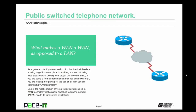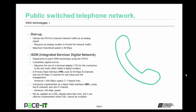One of the most common physical infrastructures used in WAN technology is the public switched telephone network, the PSTN, due to its widespread availability — just about everybody has a telephone line run to their house or building. An older technology, but still somewhat valid today, is dial-up. Dial-up utilizes the PSTN to transmit network traffic as an analog signal and does require an analog modem to format the network traffic correctly. Your maximum theoretical speed on dial-up is 56 kilobits per second.